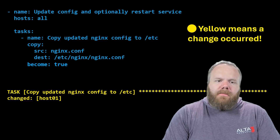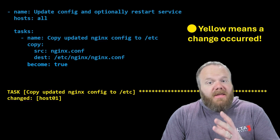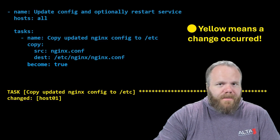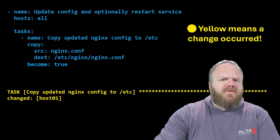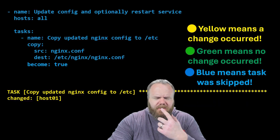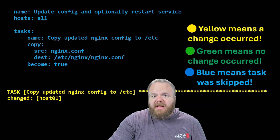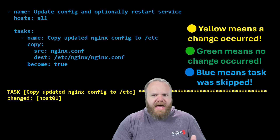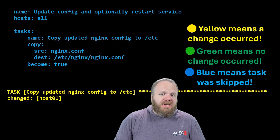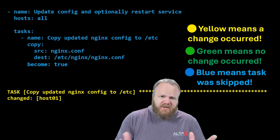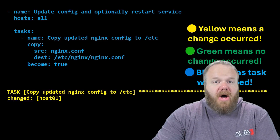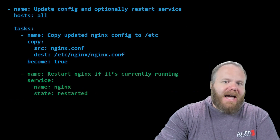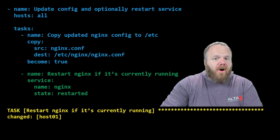Yellow in Ansible's color palette means that a change has occurred. And there are lots of other colors for other things too. Green means that no change has occurred. Blue might mean that we skipped this task. And you can change these colors if you have color blindness or other preferences, but these are the default. So now that our playbook isn't failing out, it will actually be able to get to that second task where we'll restart Nginx, and it will work.